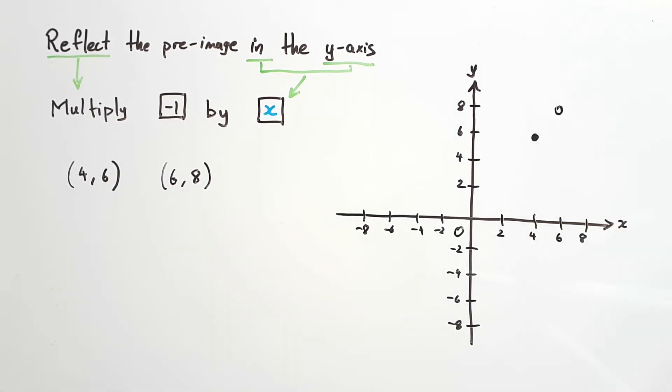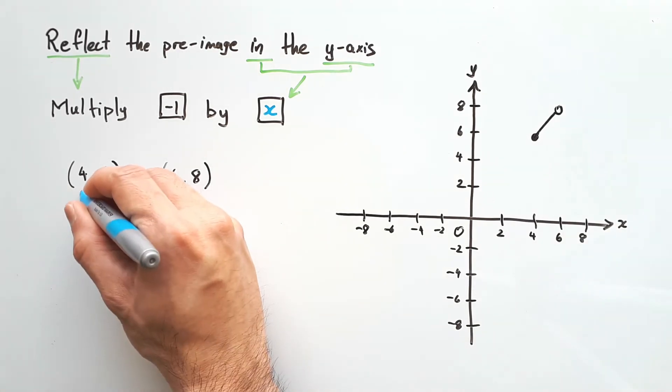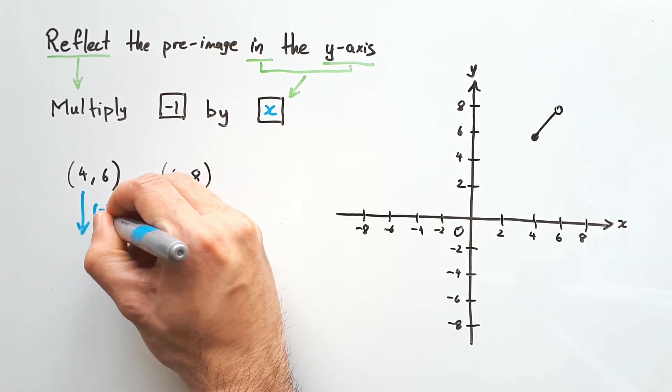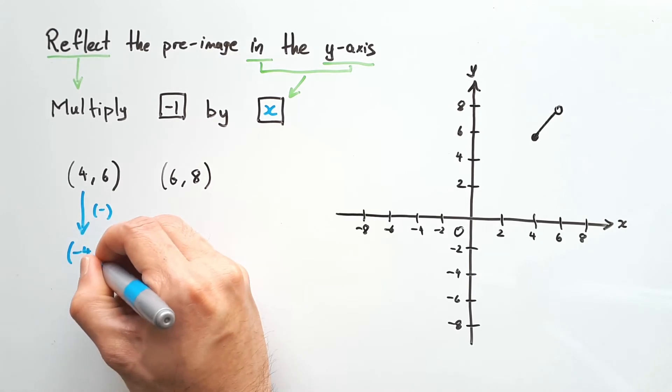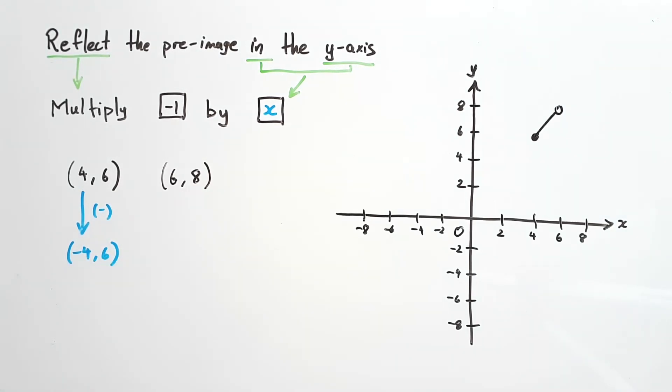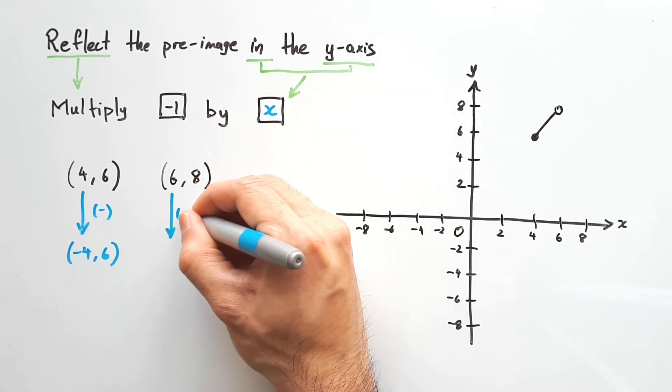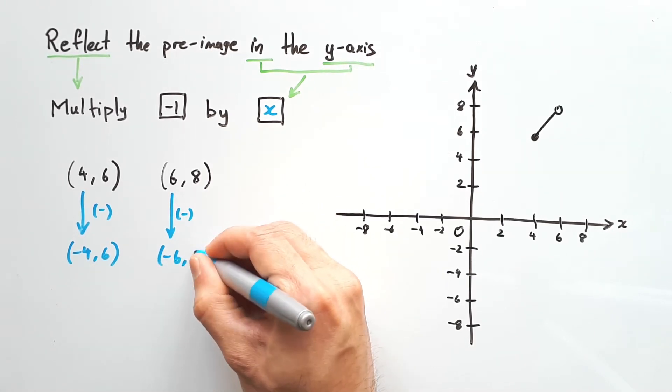And the other points would follow suit, since they sit on the line between these two points. For the first pre-image point, multiply 4 by negative 1, and we get negative 4,6. As for point number 2, multiply 6 by negative 1, and we have negative 6,8.